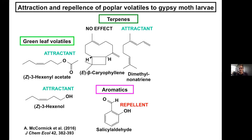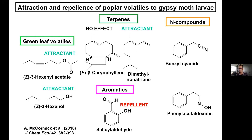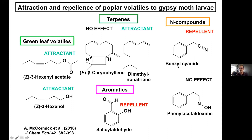These nitrogen-containing compounds were fairly major components in the poplar volatile blend. Although benzalcyanide had no activity, the aldoxine was a strong repellent. This got us interested in looking more closely at nitrogen-containing compounds. Andrea found that the aldoxine — this N-hydroxyl compound — was quite toxic. At natural concentrations of about five micrograms per gram in poplar foliage after herbivore attack, there was a definite decline in survival and average larval weight.